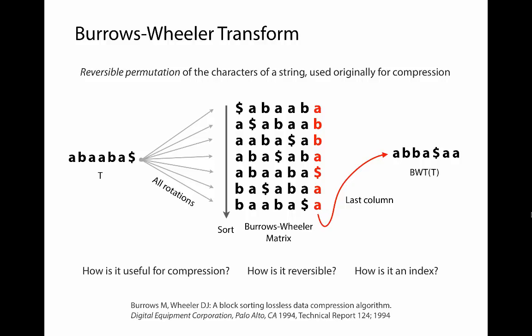Now there are a lot of questions we need to answer. I've showed you the transform going in the forward direction - we took a string and found its transform. I told you it was originally developed for compression, but it's not obvious yet exactly how you can use it for compression. I've also told you it's reversible, but it's not obvious how you would get from this string back to the original. And at the beginning, I said we're ultimately going to use this to build an index - it's also not clear how we would use it for that purpose.